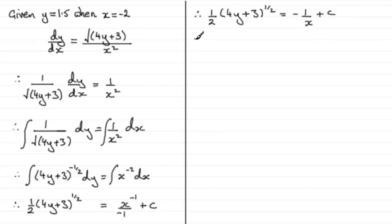Now let's use this information up here to get what c is. So we'd say that when y equals 1.5, x equals minus 2. Therefore if we substitute this into this equation, let's call this equation 1. Therefore sub in 1, and what we have is that 4 times 1.5 is going to be 6, 6 plus 3 is 9, 9 to the power half is 3.